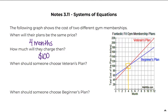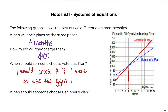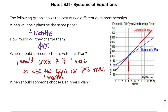Now it's asking when someone should choose the veterans plan. At the beginning the red plan is cheaper, and it stays cheaper until the four-month mark. After four months it becomes more expensive. So I would choose the veterans plan if I'm going to use the gym for less than four months. Before four months the beginners plan is not the better option, but after four months the beginners plan is less expensive.